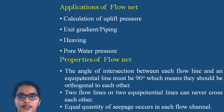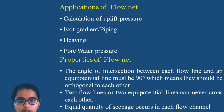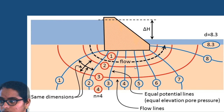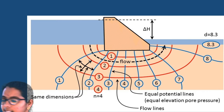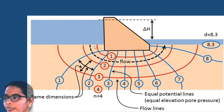Properties of flow net: The angle of intersection between each flow line and equipotential line must be 90 degrees — they are orthogonal to each other. If you see the flow net diagram, the red flow line and the blue equipotential line meet at a 90-degree angle, they are perpendicular to each other. Two flow lines never meet each other, and two equipotential lines never meet at one point.